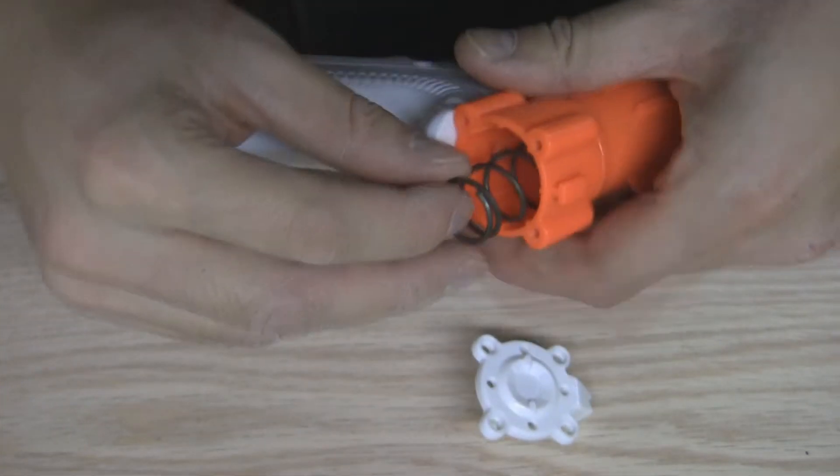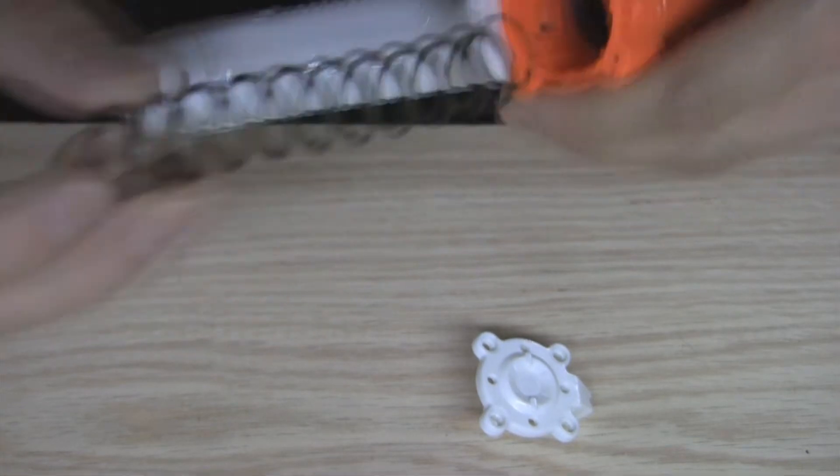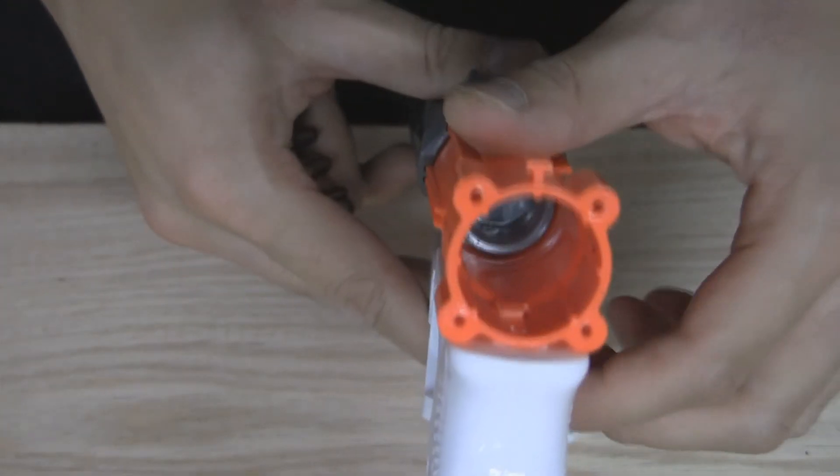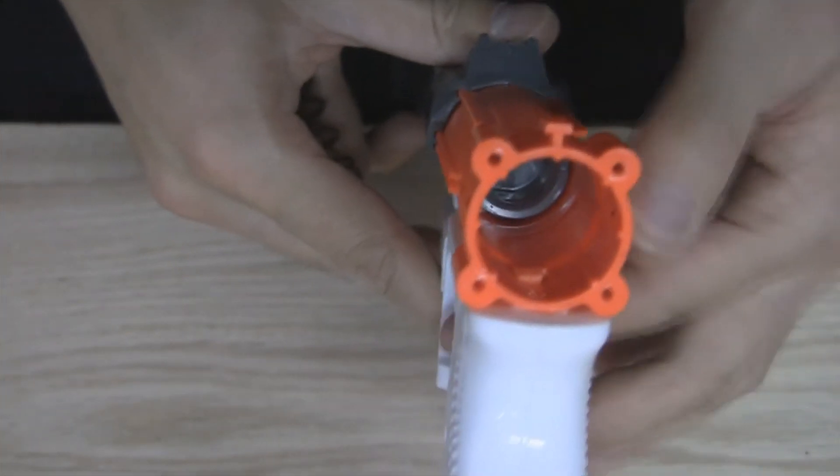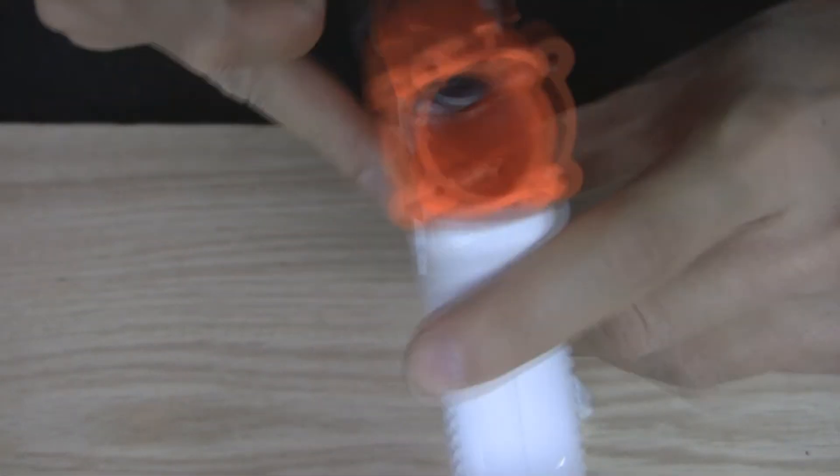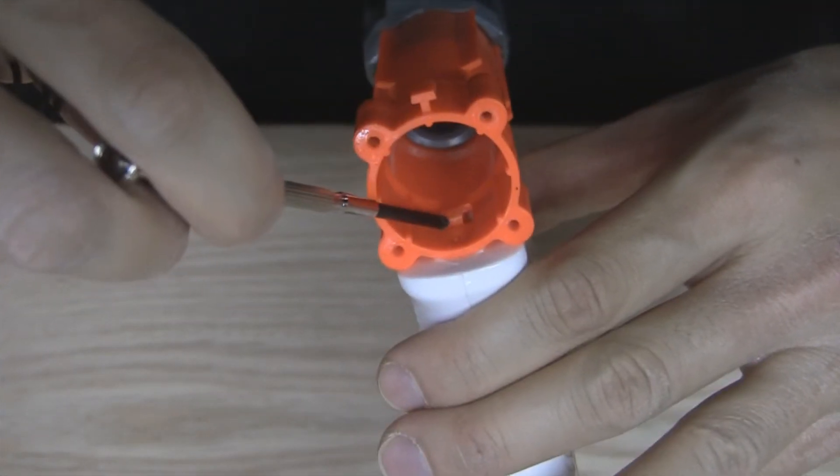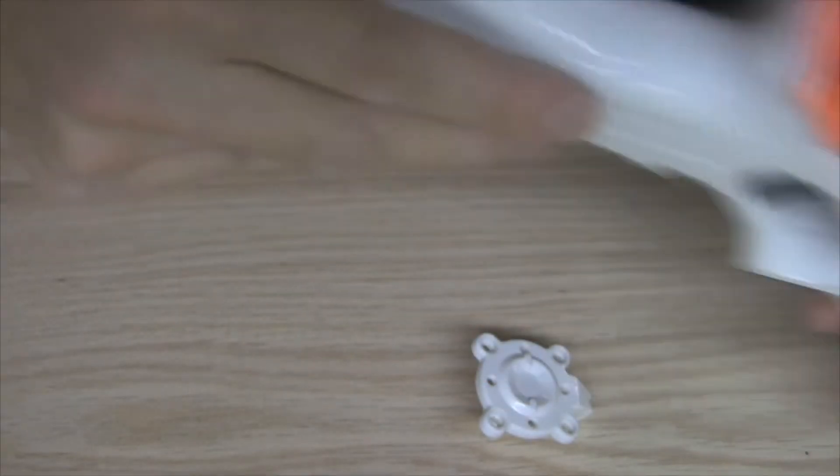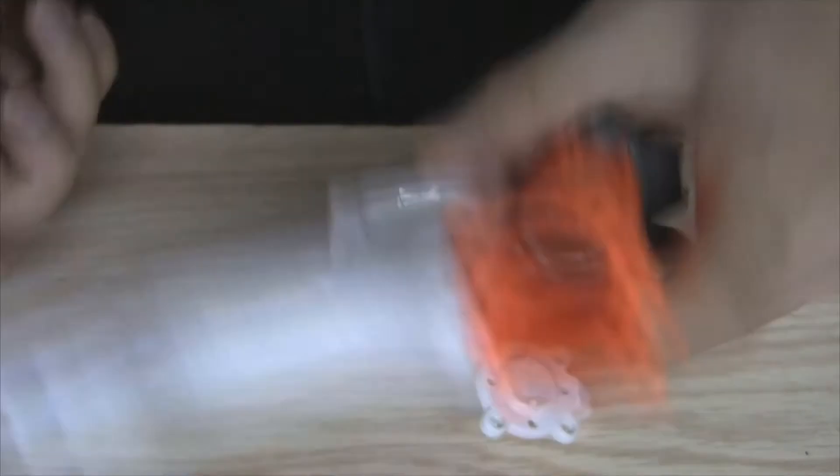The other problem was that this spring was so strong and stiff that this little plunger on the inside would bind and catch on this little trigger mechanism. And what that did was you couldn't pull the trigger to release that plunger and allow the air to come out.